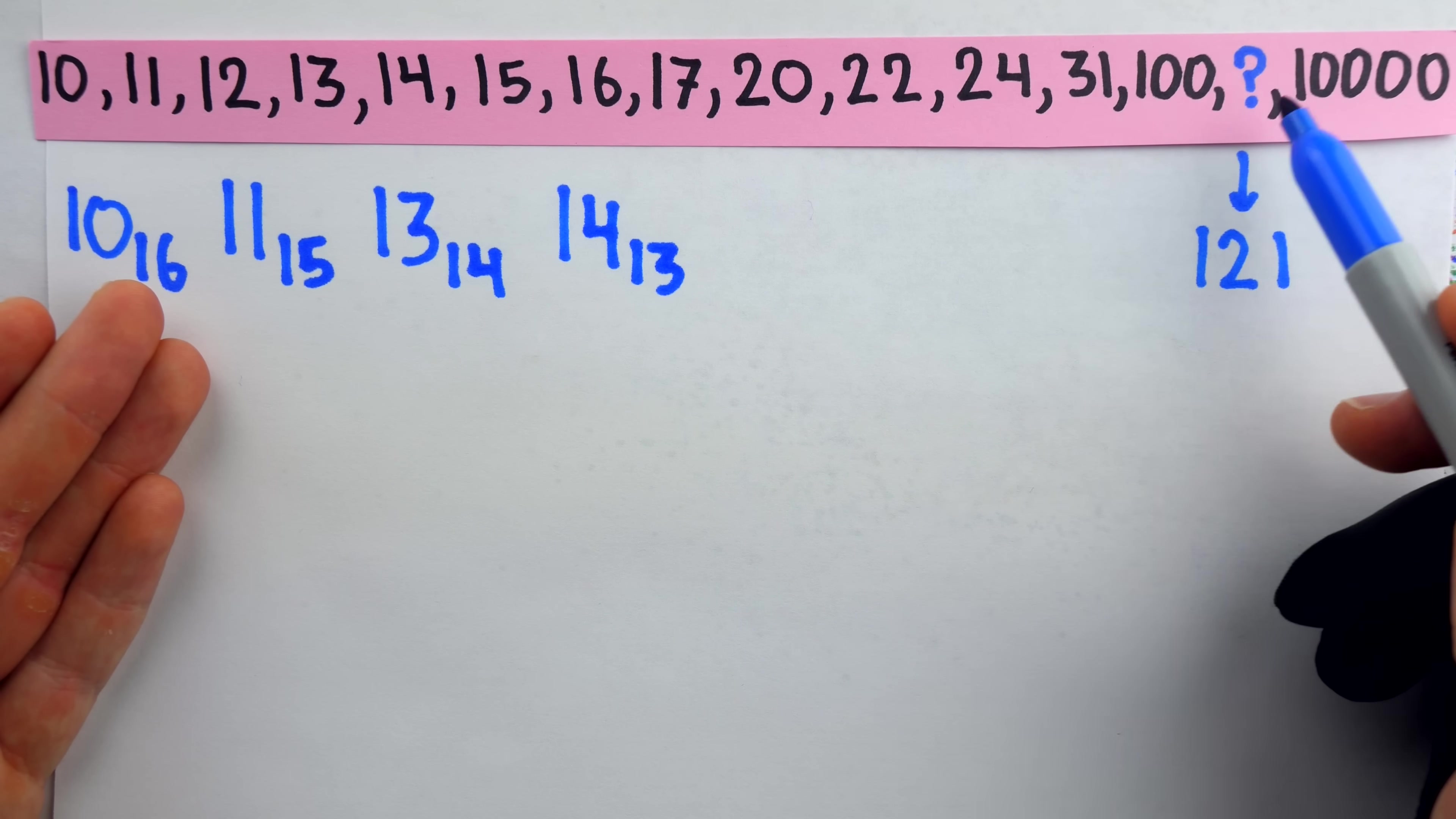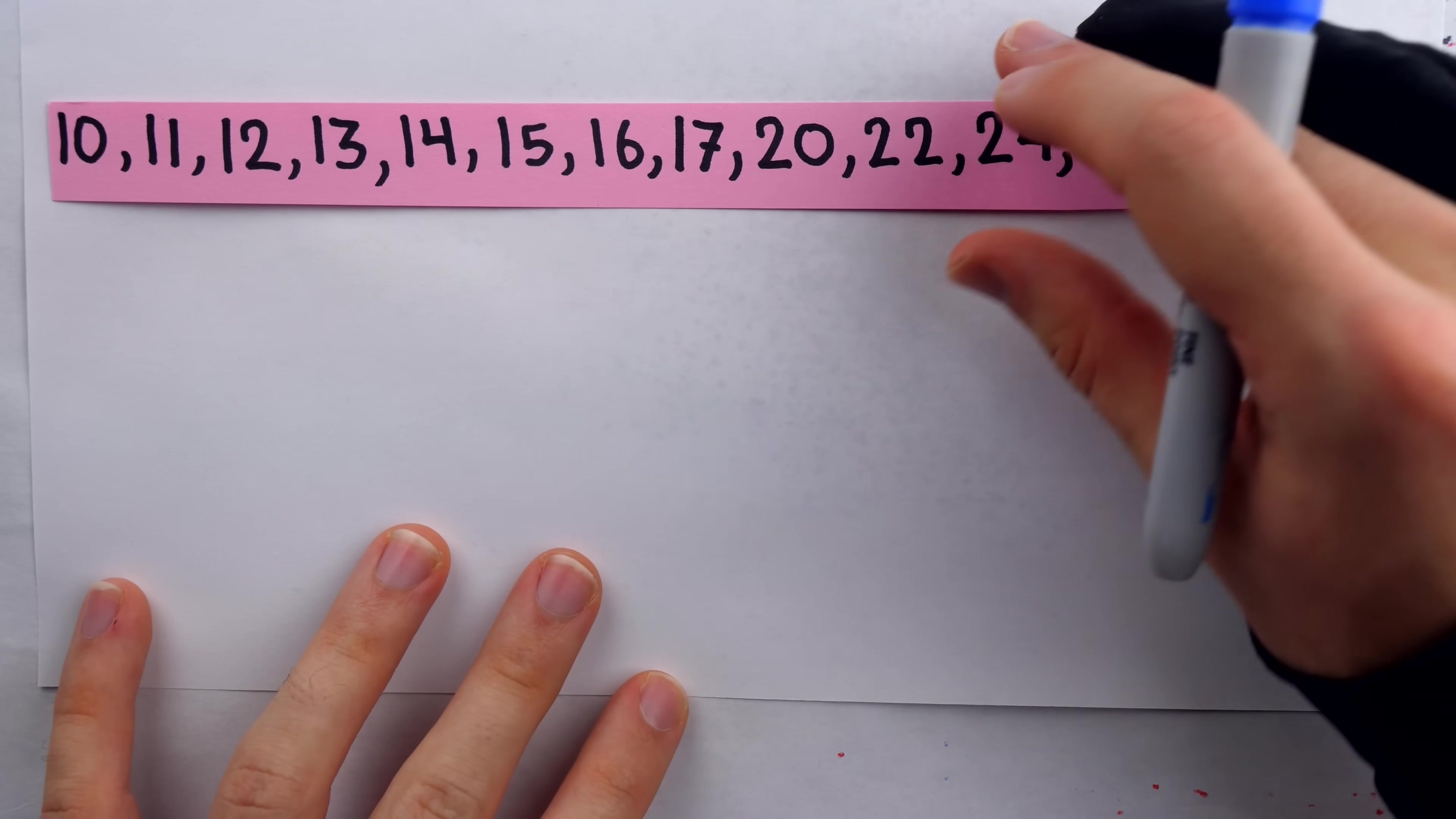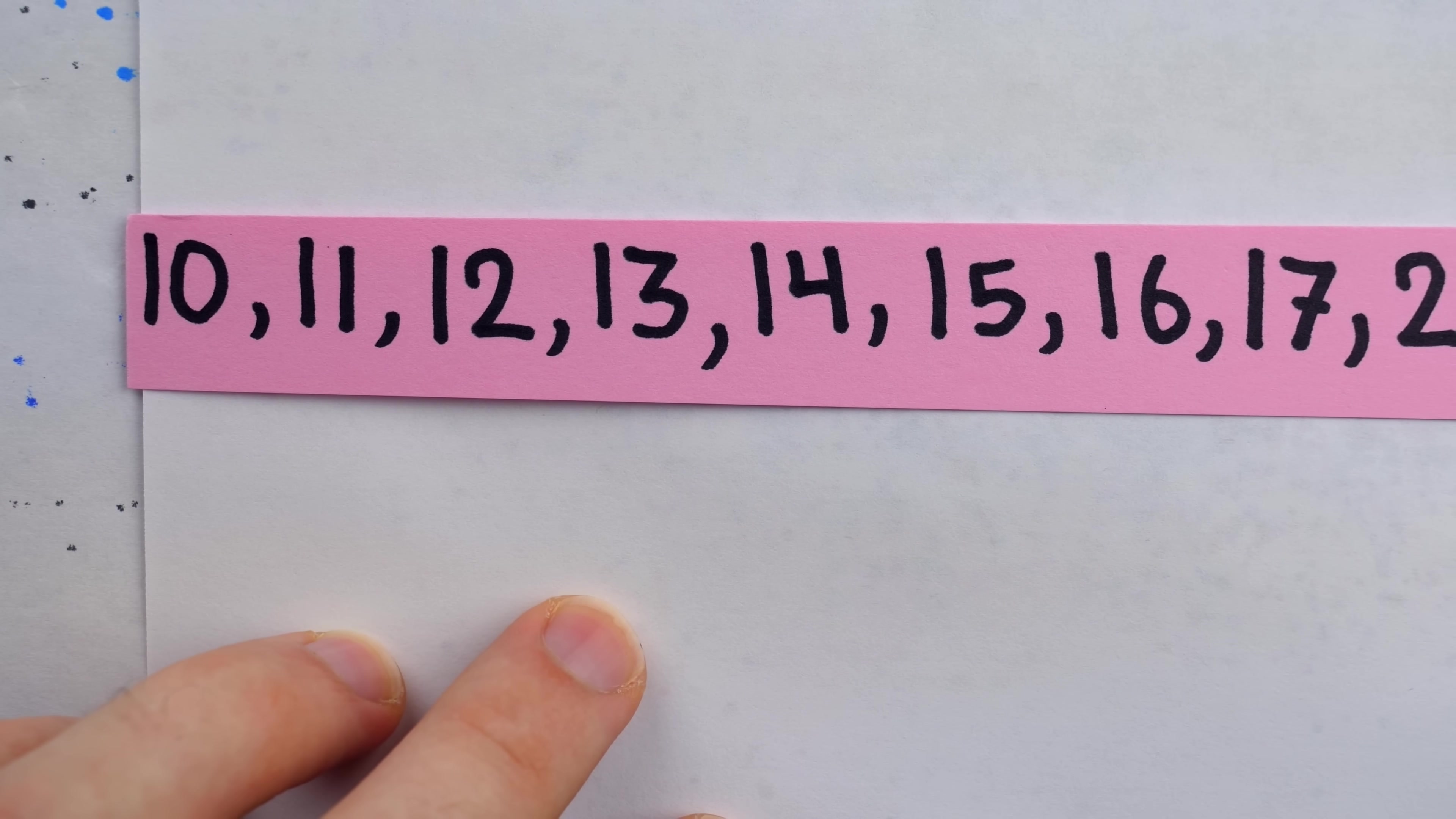Now allow me to give a more full explanation of how we get one, two, one for this puzzle. Some of the clues you might have been able to notice is that, again, the differences between consecutive terms are very awkward. Of course, that tells us we're going to have to think a bit outside of the box.